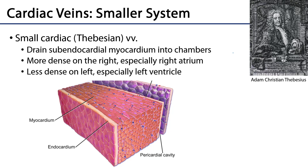The smaller system consists of small cardiac veins, sometimes called Thebesian veins, after Adam Christian Thebsius, who was a German anatomist. These small cardiac veins drain the subendocardial myocardium and they drain directly into whichever chamber they are adjacent to. They are at their greatest density, curiously enough, around the right atrium, and at their least density around the left ventricle, but all of these small cardiac veins drain into the chambers of which the myocardium is going to surround.